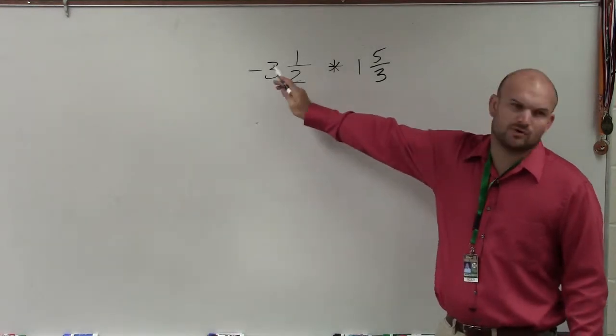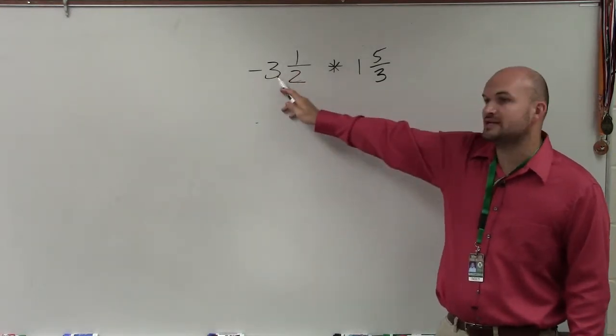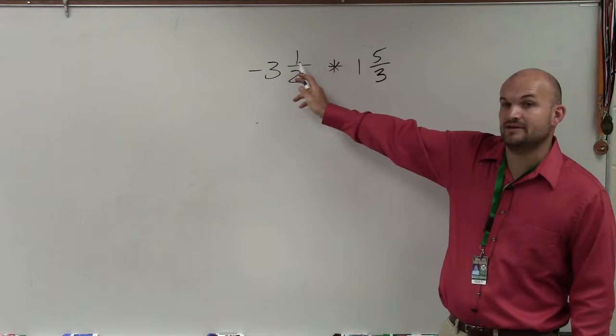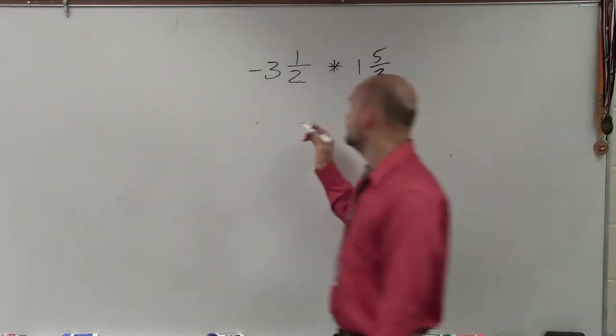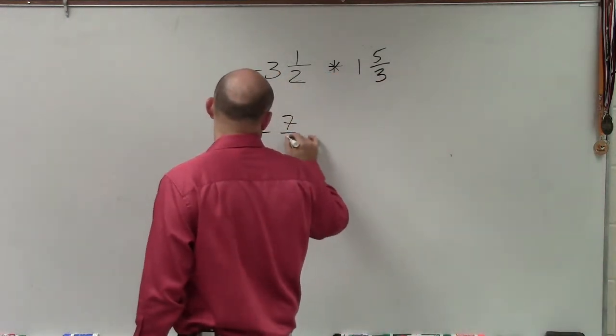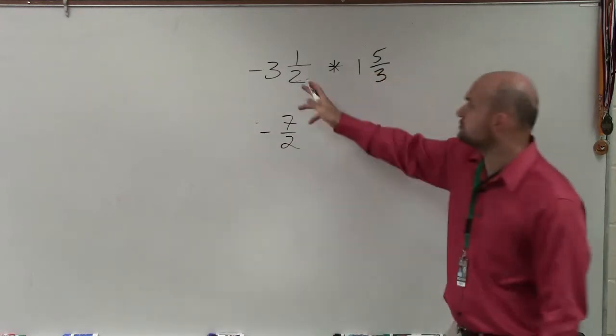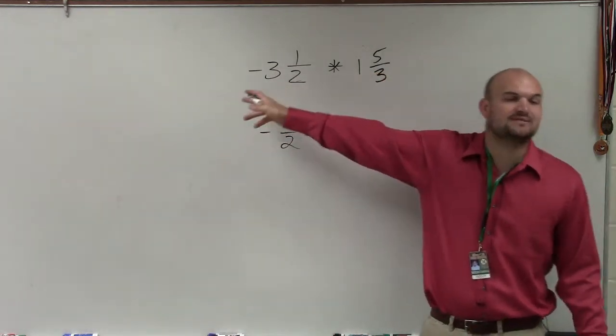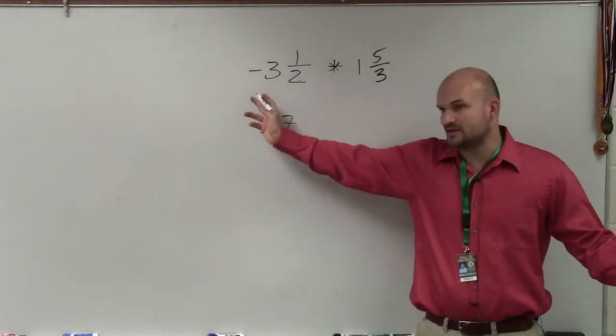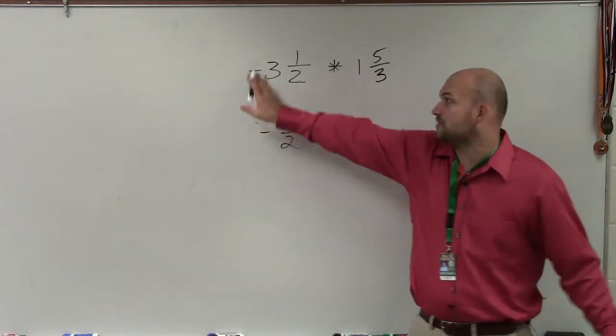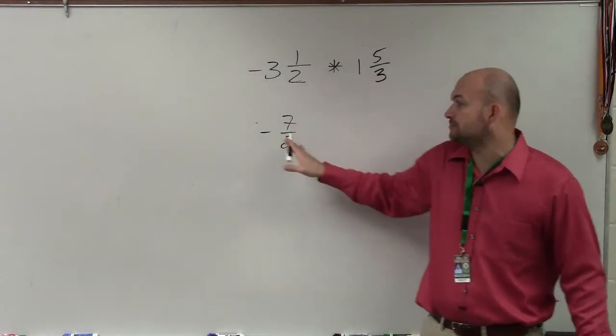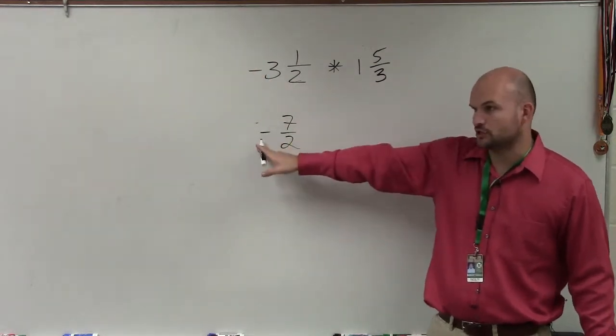2 times 3, don't worry about the negative sign. 2 times 3 is 6, plus 1 is 7. But remember, it's negative, right? So it's negative 7 halves. Just don't do 2 times negative 3 is negative 6, plus 1 is negative 5. Just ignore the negative sign when you convert, and then just include it at the end.